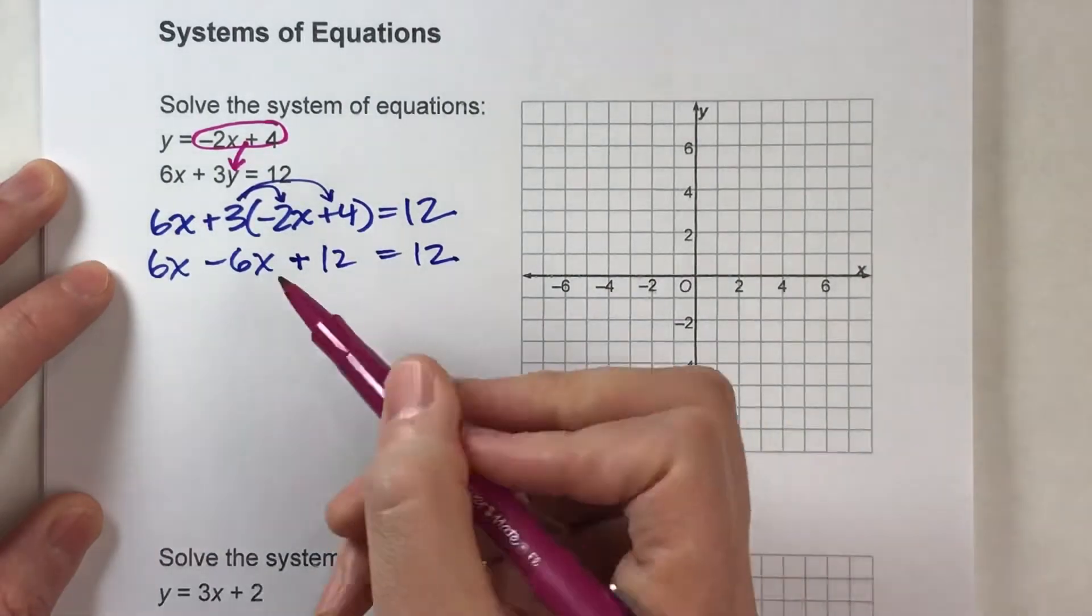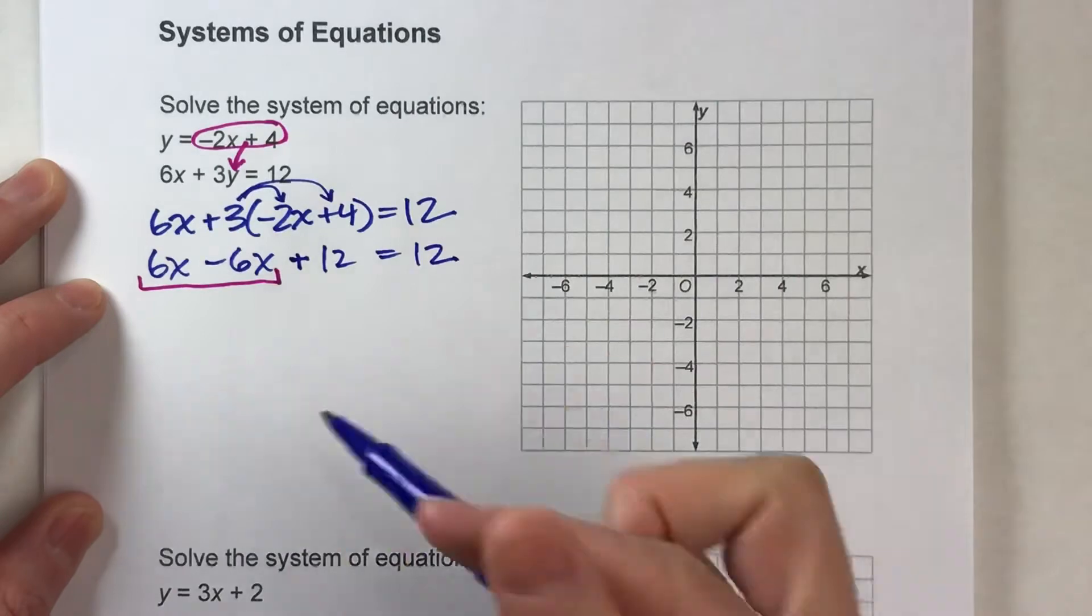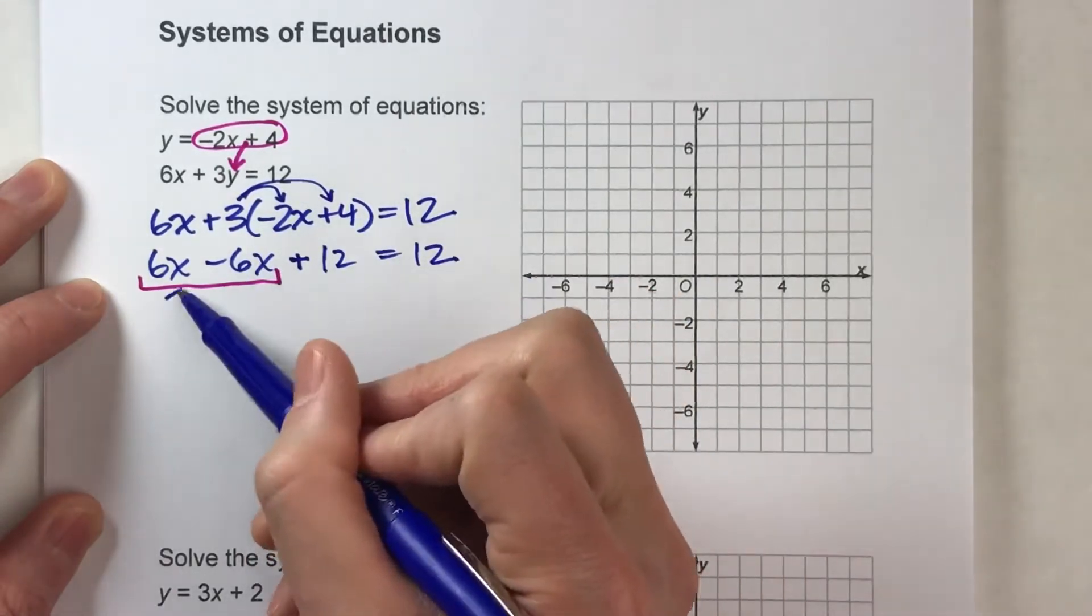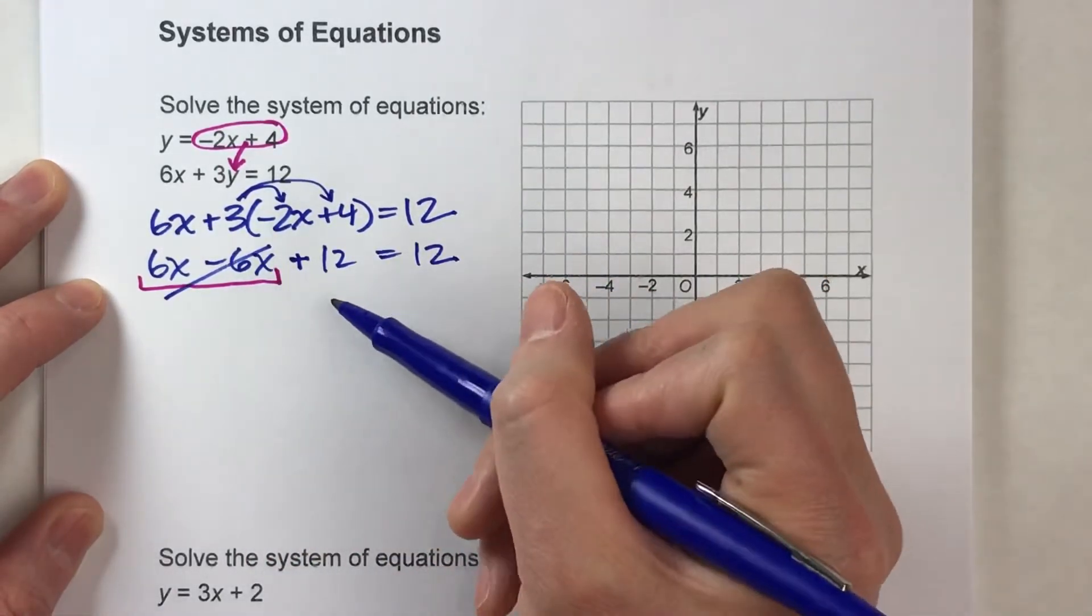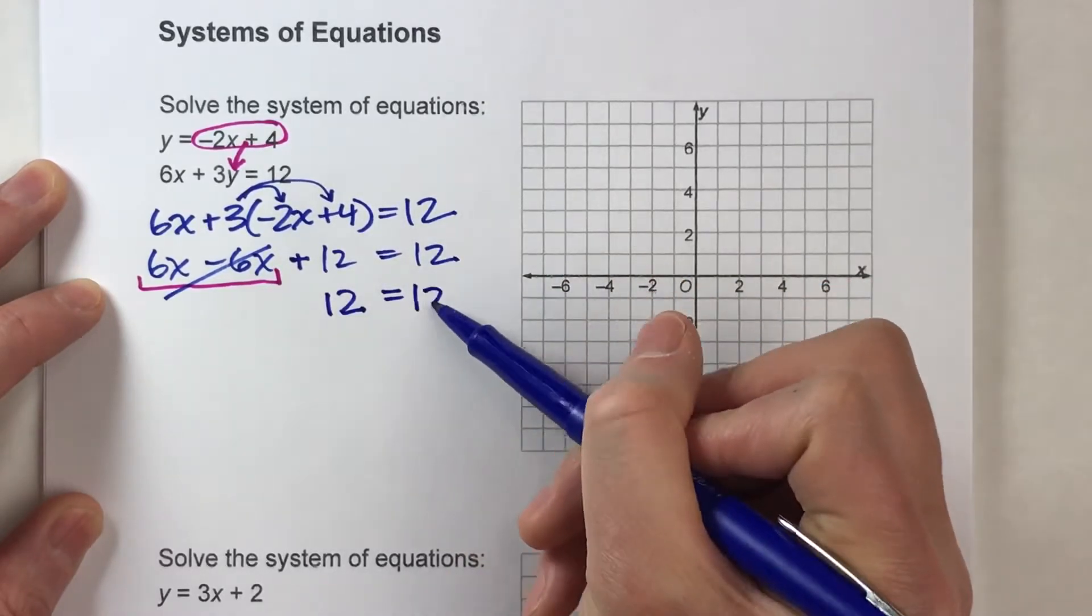On the left side, I've got two different groups of x's, so I can combine my like terms here. 6x minus 6x leaves me with nothing, so all that's left on the left side is 12. And drop down my equals and drop down my other side.